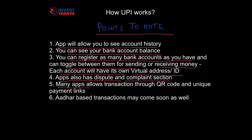Currently many apps — and eventually all apps — will allow transactions through QR code and unique payment links. If you go shopping and want to pay through your UPI app, the merchant can create a dynamic QR code using your virtual ID, which you can scan on your UPI app, enter your MPIN, and the transaction is done immediately. Similarly, if you are doing an online e-commerce transaction, you can select the UPI option and the e-commerce website will create a unique payment link, which will take you to your UPI app where you just have to enter your MPIN.